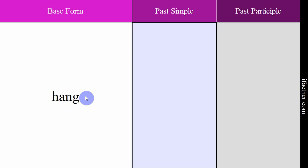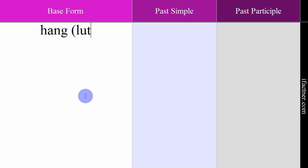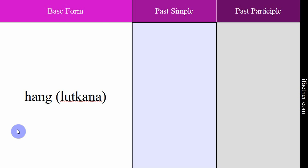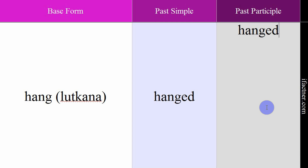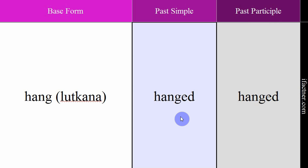The next verb is 'hang', meaning letkana — to hang. Example: 'She hangs the clothes outside.' Past simple and past participle form is 'hanged'. Past simple: 'He hanged up the phone on me.' — Usne mujh per phone rakh diya. Past participle: 'I have hanged my clothes.' — Mein apne kapre latka chuka hoon. So 'hang' means latka na. Past simple: hanged. Past participle: hanged.